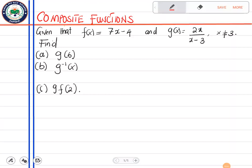Find g(6), g inverse of x, and g of f of 2. So let's dig into this. First of all, let's start with g(6). So g(6) means in the function g, where there's x we put 6. So we have 12 divided by 3 to give us 4. Done.